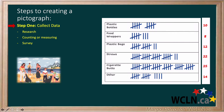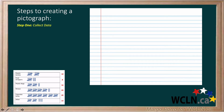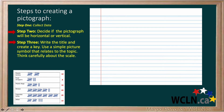Let's move to steps 2 and 3 for creating a pictograph. We will keep the data handy. Step 2 is to decide if your pictograph will be horizontal or vertical. Let's start with a horizontal pictograph. Step 3 is to write the title and create a key. Use a simple picture symbol that relates to the topic and think carefully about the scale.